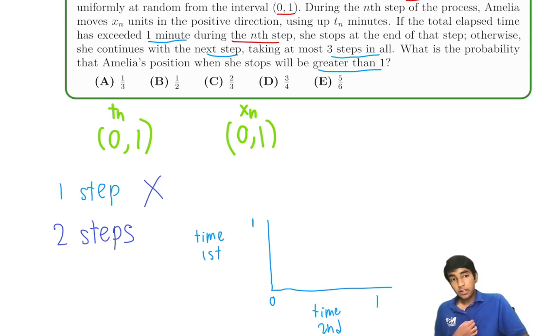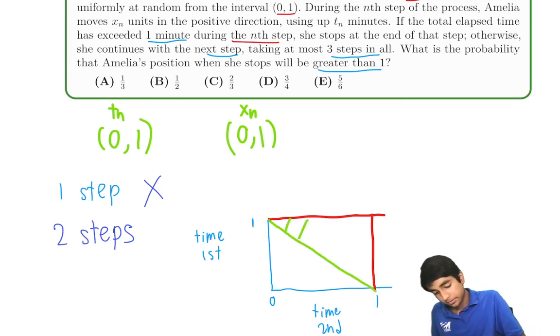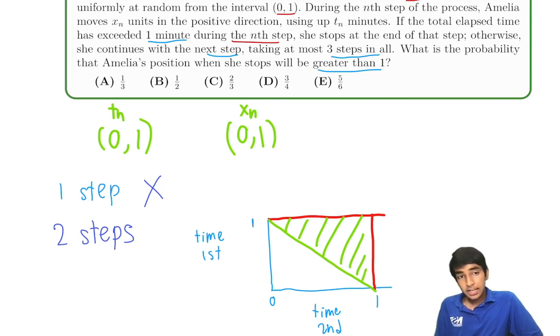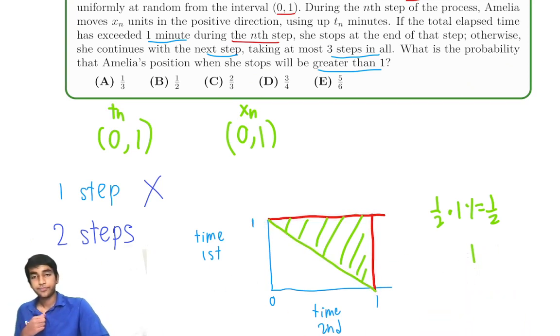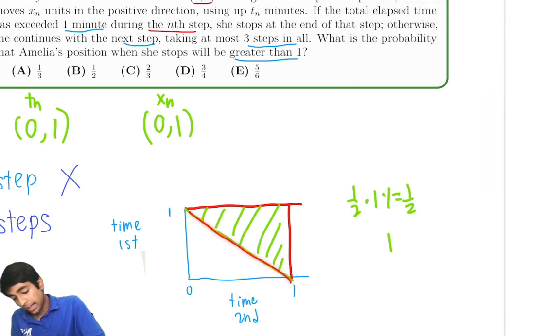So what's the probability that after two steps it will exceed one minute? Notice that our possibilities lie within this one by one square. So in this square from 0 to 1, how can we represent geometrically the case where the time from both steps is more than 1? It's just going to be above this line right here. So what's the area of this triangle? Half times 1 times 1 equals half, and the area of the square is just 1. So half of the time, the time taken will be more than 1 minute. Because half of the area is greater than this line x plus y equals 1, where x is the time for the first step and y is the time for the second step.